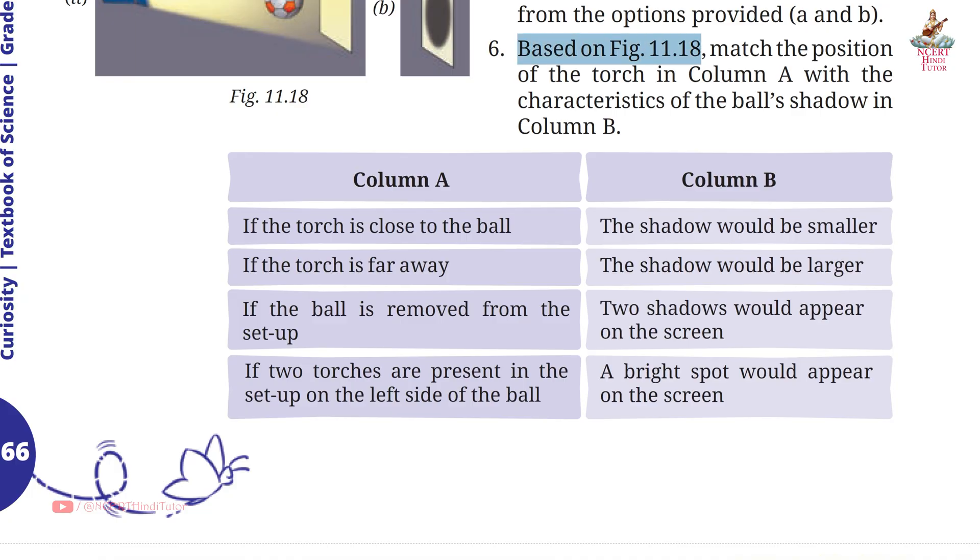Question 6: Based on figure 11.18, match the position of the torch in column A with the characteristics of the ball's shadow in column B. Answer: If the torch is close to the ball, the shadow would be larger. If the torch is far away, the shadow would be smaller. If the ball is moved from the setup, a bright spot could appear on the screen. If 2 torches are present in the setup on the left side of the ball, 2 shadows would appear on the screen. You can match them accordingly.